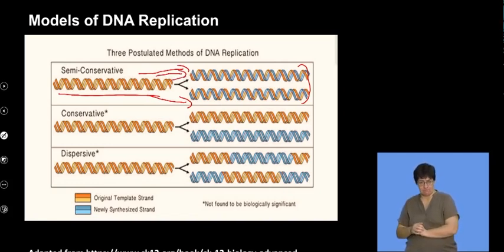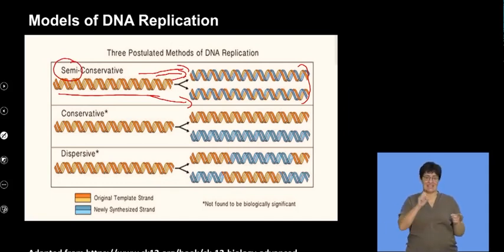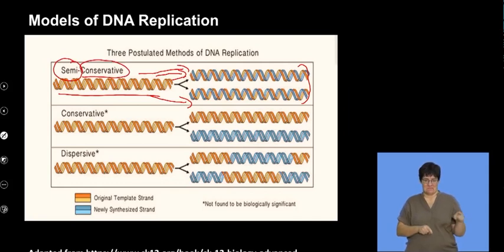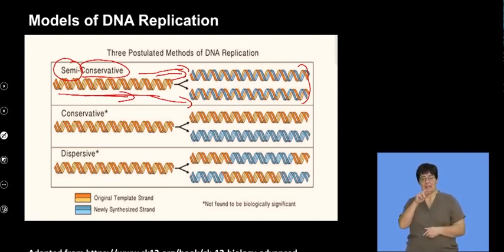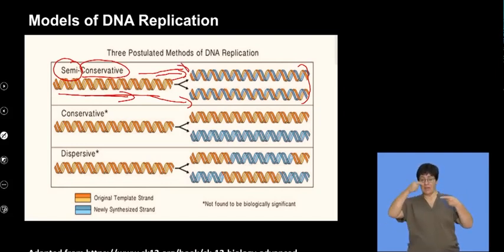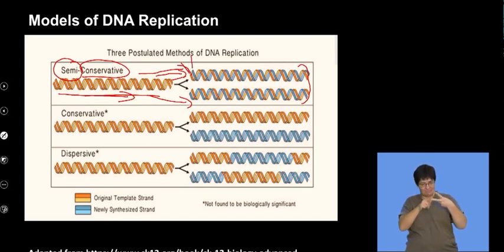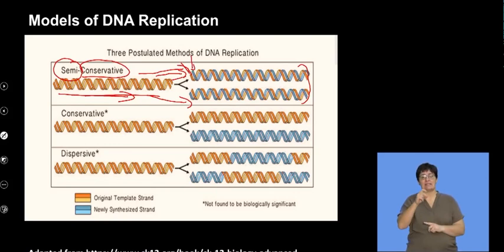We refer to this as a model showing half — which is 'semi' — and 'conservative' refers to keeping the old. So at the end of replication using the semi-conservative model, we have two new strands and each of these strands has a copy of the old strand and a new complementary strand. This is the semi-conservative model.